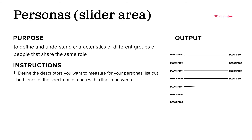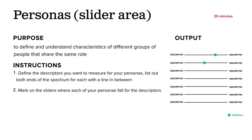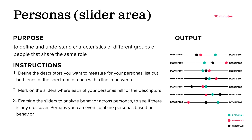Once you have a bunch of these descriptors and sliders, you might want to list out all the descriptors and plot where persona one, persona two, and persona three lie on those different descriptors. This can give you insight into how those initial role-based personas actually behave, and whether their behaviors may actually warrant them being the same persona.